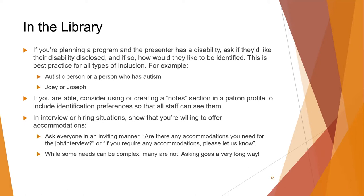For example: 'autistic person' or 'a person who has autism' — identity-first versus person-first — and whether someone prefers 'Joey' or 'Joseph.' All these details are important to show that you are listening and that you care. If you're able, consider using or creating a notes section in a patron profile to include identification preferences so all staff can see them. However, some people in the disability community may not like this, so this should be optional and implemented very carefully.